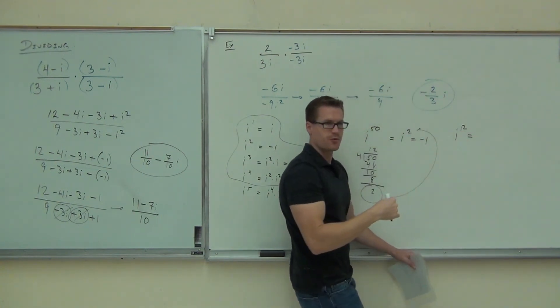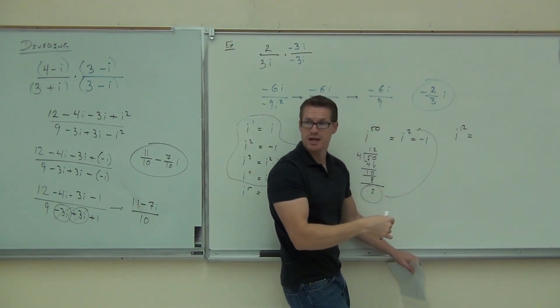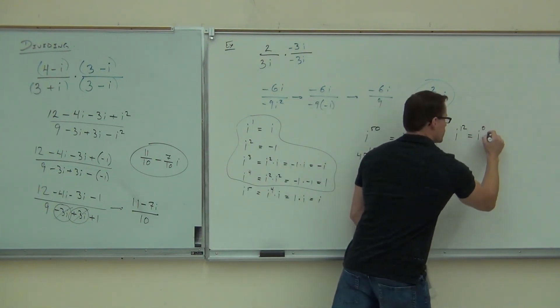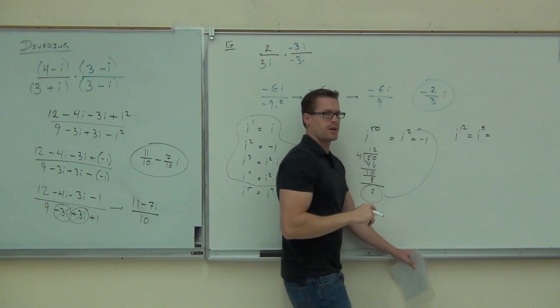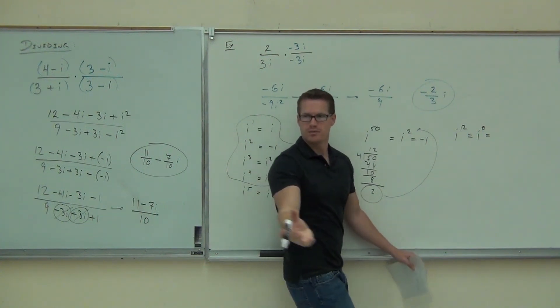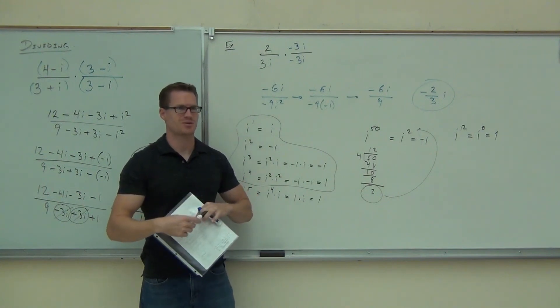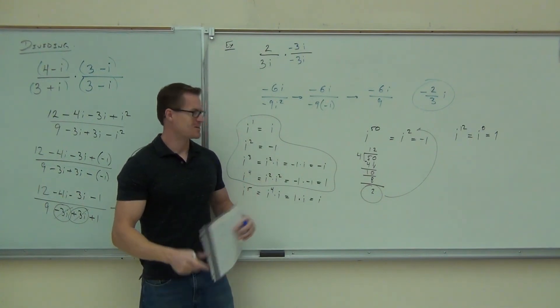i to the twelfth, divide that by four. It goes in three times. You get a remainder of zero. True? Yeah. How much is i to the zero power? How much is anything to the zero power? No, it's one. Oh. Trick question. No, it's not a trick question. Anything to zero power is one. No matter what.